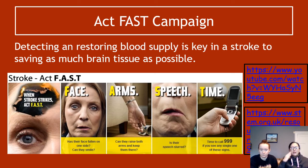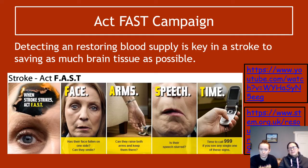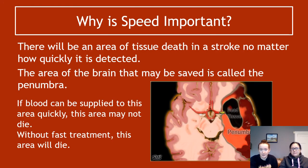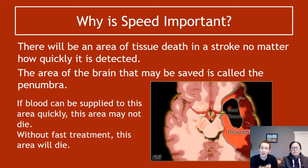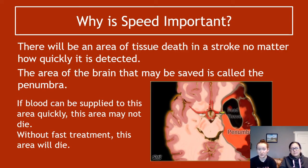Arms — can the person raise both arms and keep them there? Speech — can they speak, or is their speech slurred? T — Time to call 999 if you see any of those signs. Speed is really important: the longer you take to deal with tissue death in your brain, the more brain tissue that will die. The quicker you notice someone is having a stroke and get them help, the more likely you are to save more of their brain.